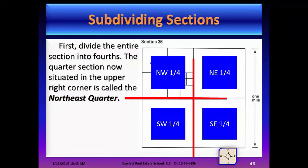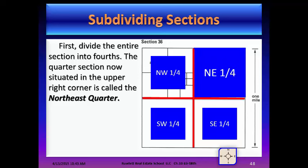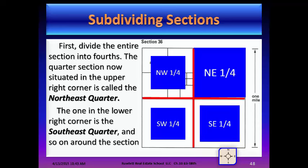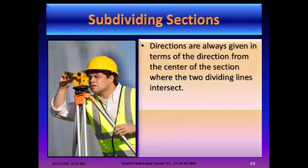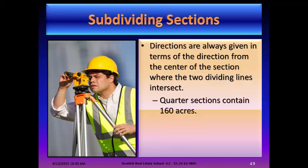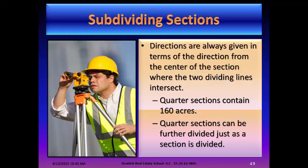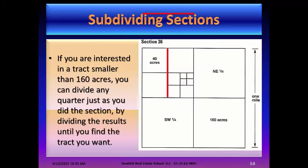When subdividing sections, first divide the entire section into fourths. The quarter section in the upper right corner is called the northeast quarter; the lower right is the southeast quarter, and so on. Directions are always given from the center of the section where the two dividing lines intersect. Quarter sections contain 160 acres and can be further divided just as a section is divided. If you need a tract smaller than 160 acres, divide any quarter just as you did the section, repeating until you find the tract you want.